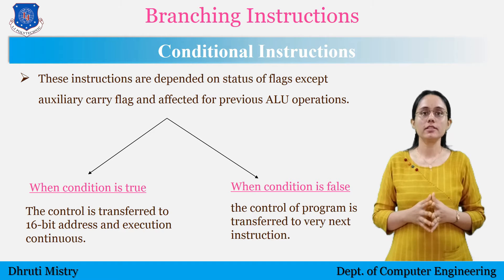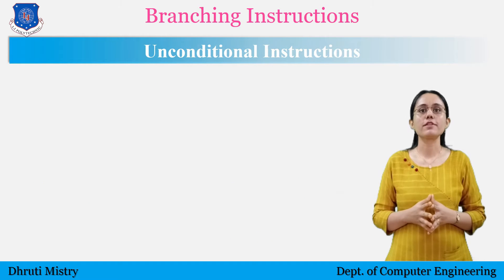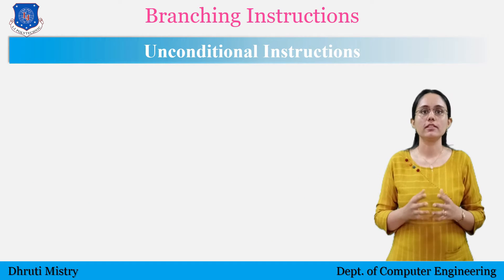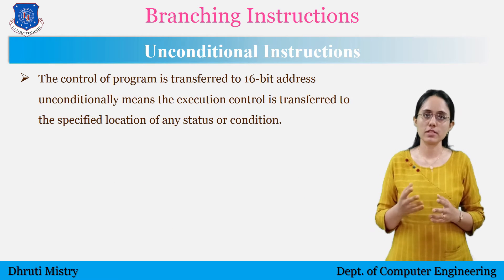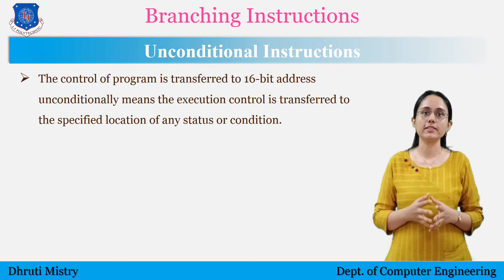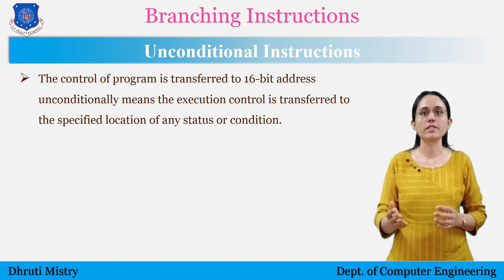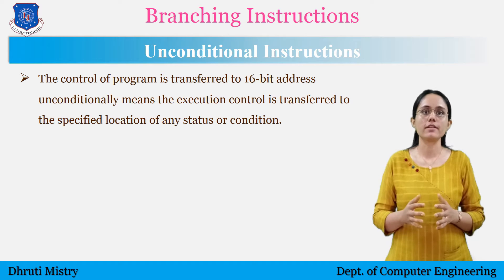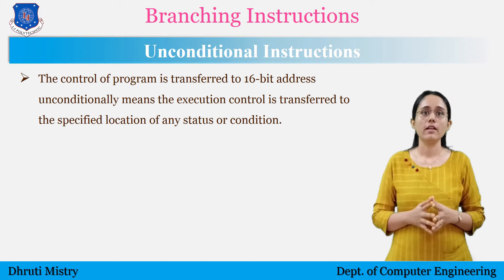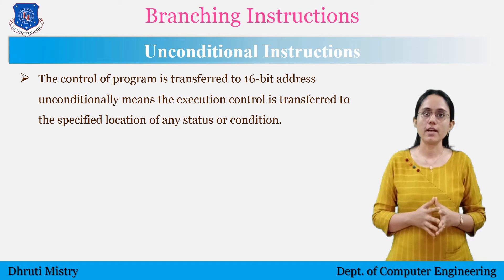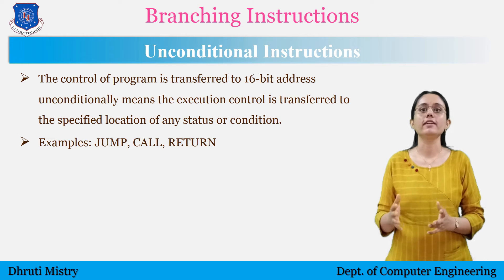In unconditional control transfer instructions, the control of the program is transferred to a 16-bit address unconditionally. This means the execution control is transferred to the specific location regardless of any status or condition. Examples of branching instructions are jump, call and return.